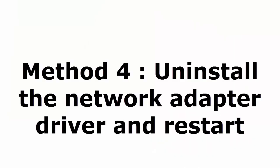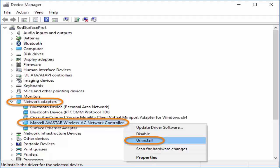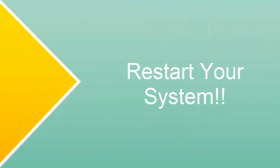If that didn't work, let's go to the final method. Method 4: Uninstall the network adapter driver and restart — this will definitely help. Go to Device Manager, click on Network Adapters, and right-click on your network driver. Click Uninstall. Don't worry — you are not permanently removing the driver, just temporarily uninstalling it. Click OK or Yes when prompted, then close everything and restart your system. When you restart, Windows will automatically reinstall the network adapter driver, and see if the problem is fixed.